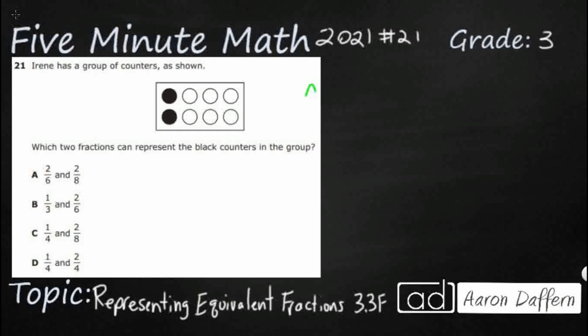So our numerator is going to be our top number and that is the number of, in this case we're looking at black counters, so we'll say the number of black counters.